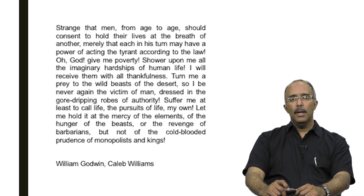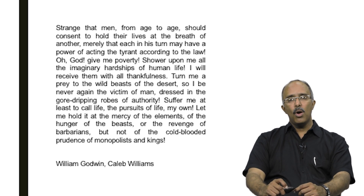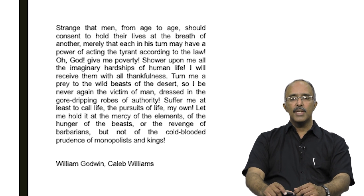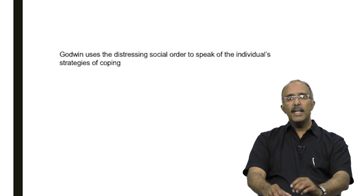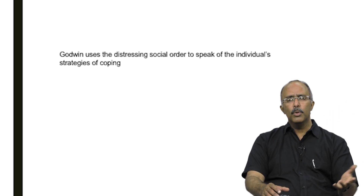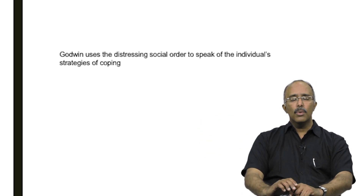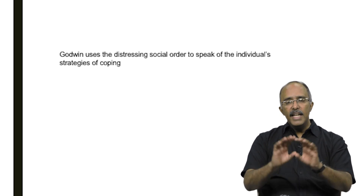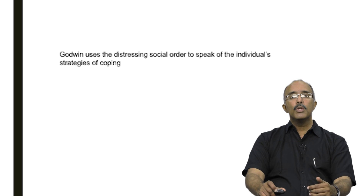Note the tone in which Godwin is writing this passage. Godwin is not only talking about social inequality and social injustice but is approaching it via how the individual perceives these. The document here is not only one of the social variety but it is also an exploration of the psychological state of the individual who is trapped in this kind of social injustice. Godwin uses the distressing social order to actually speak about individual strategies of coping — making the link between the social domain, inequality, poor wages, poor working conditions, constant unemployment, and the individual psychological strategies of coping. So Caleb Williams is one of the first novels to develop this link between the individual and the social order via our perception of the individual's mental states.